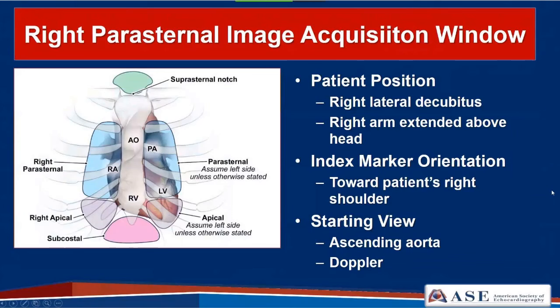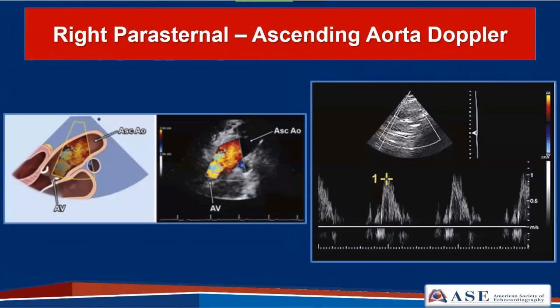Next is the right parasternal image acquisition window. The patient is rolled into a right lateral decubitus position with the right arm above the head. The index marker is towards the patient's right shoulder, and you're imaging in a plane to see the ascending aorta coming directly out of the heart, aligning parallel for a good Doppler angle. In adults, this window is predominantly used for locating the ascending aorta and placement of the blind continuous wave Doppler transducer.